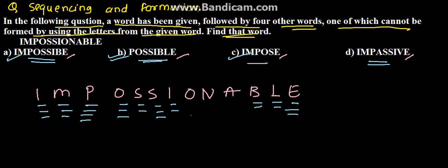I-M-P-A-S-S-I-V-E. V is absent. Therefore, we can say that the word IMPASSIVE, which is option D, cannot be formed.